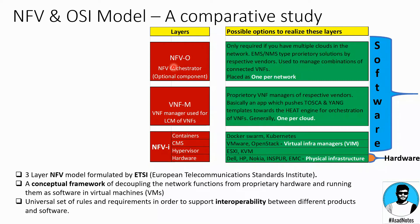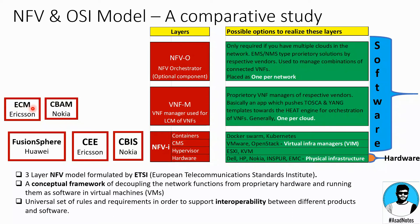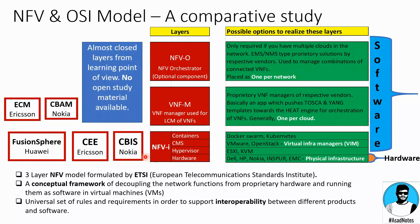Looking at vendor solutions across these layers: NFVI solutions include CloudBand Infrastructure (CBIS) by Nokia, Cloud Execution Environment (CEE) by Ericsson, and FusionSphere by Huawei. Moving one layer up, VNF managers include CloudBand Application Manager (CBAM) by Nokia and Ericsson Cloud Manager by Ericsson. From a learning perspective, all learning resources and practice platforms are available for the bottom NFVI layer only. For the upper two layers, there is no open study material available — you can only learn by working on a specific product in a company.